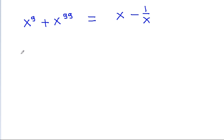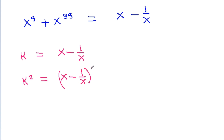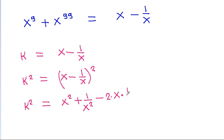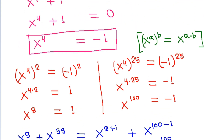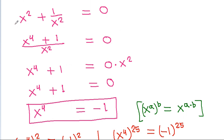Now suppose k equals x minus 1/x. Then k squared equals x minus 1/x, all squared, which equals x squared plus 1/x squared minus 2. And we have x squared plus 1/x squared equal to 0. So k squared equals 0 minus 2, therefore k squared equals minus 2.